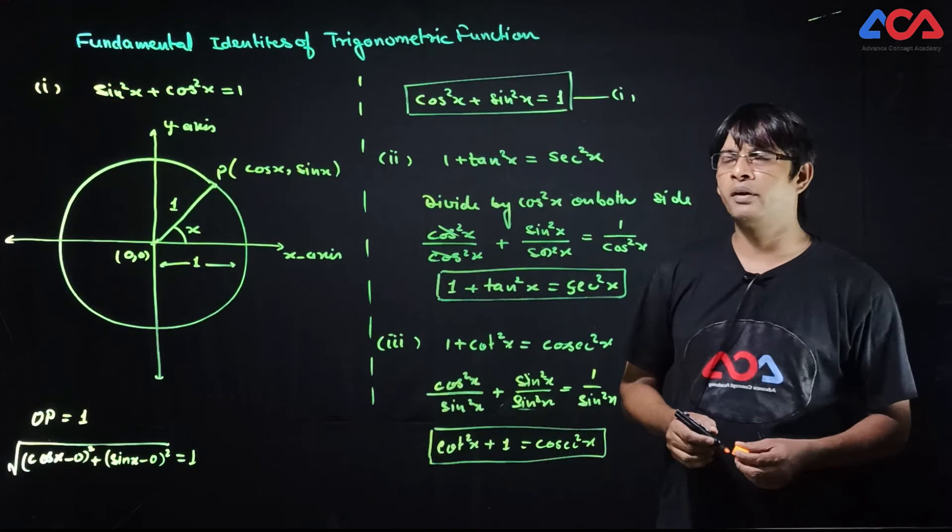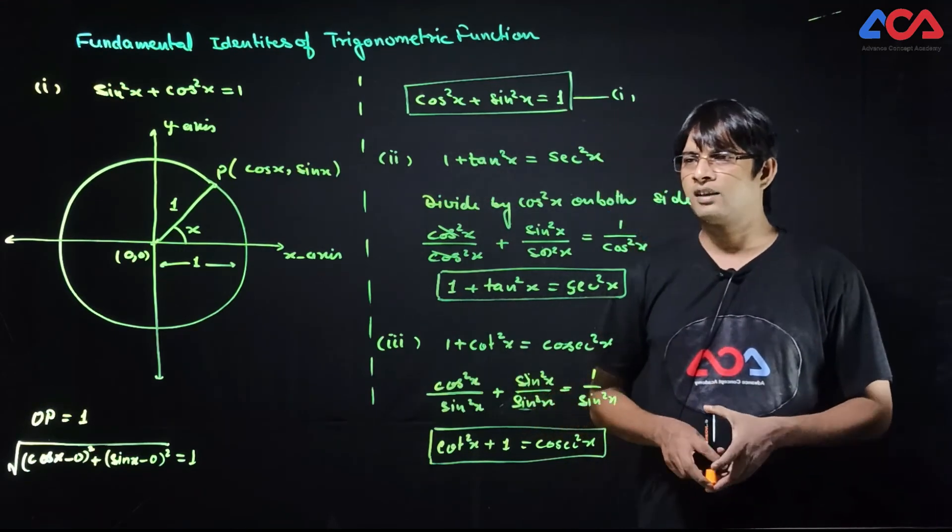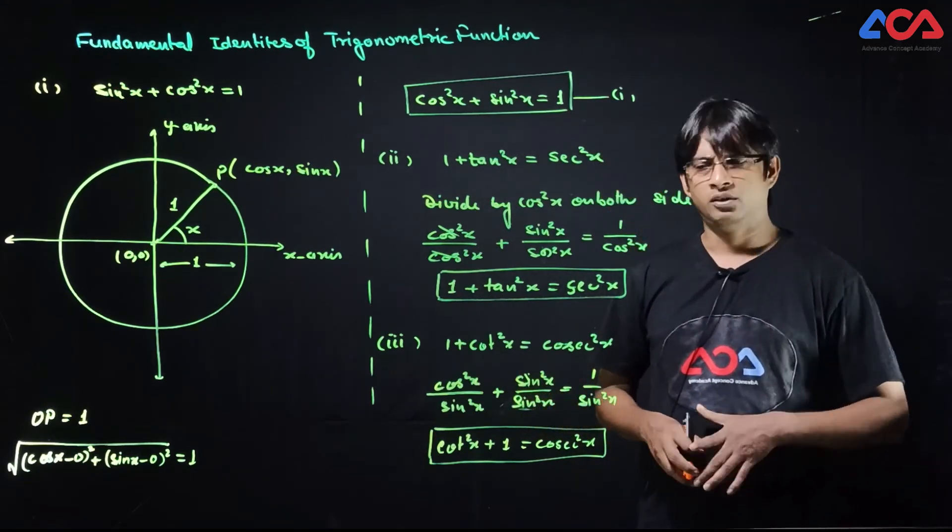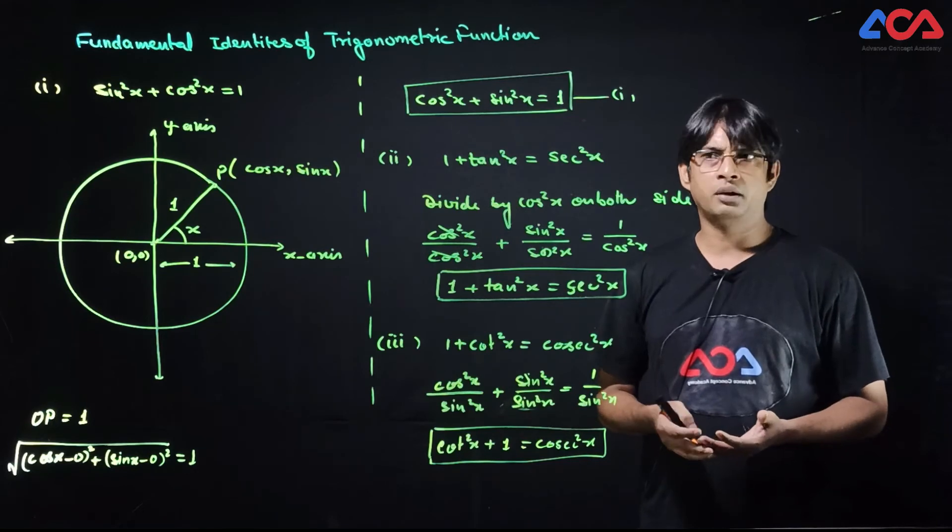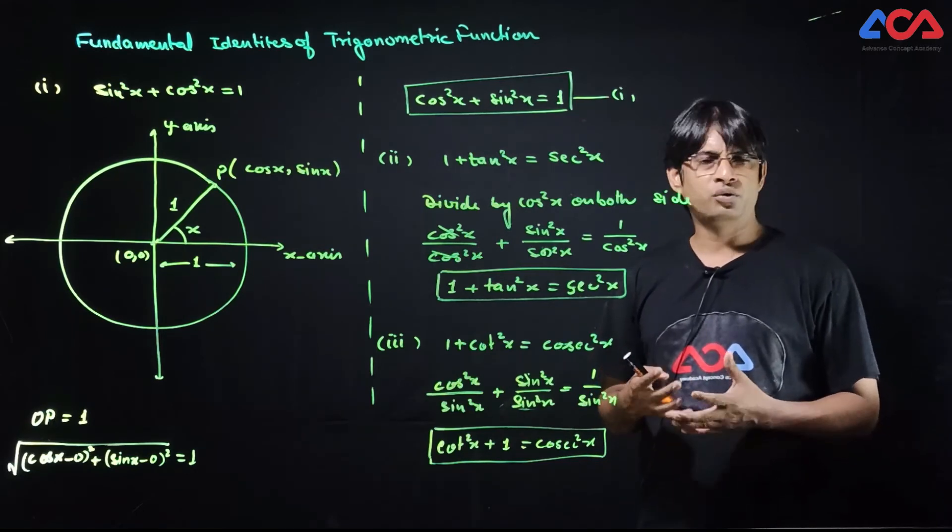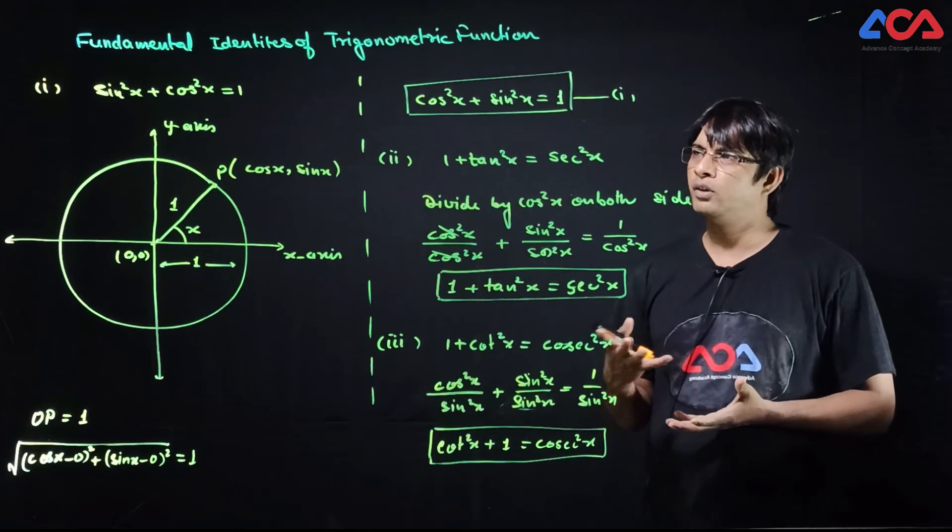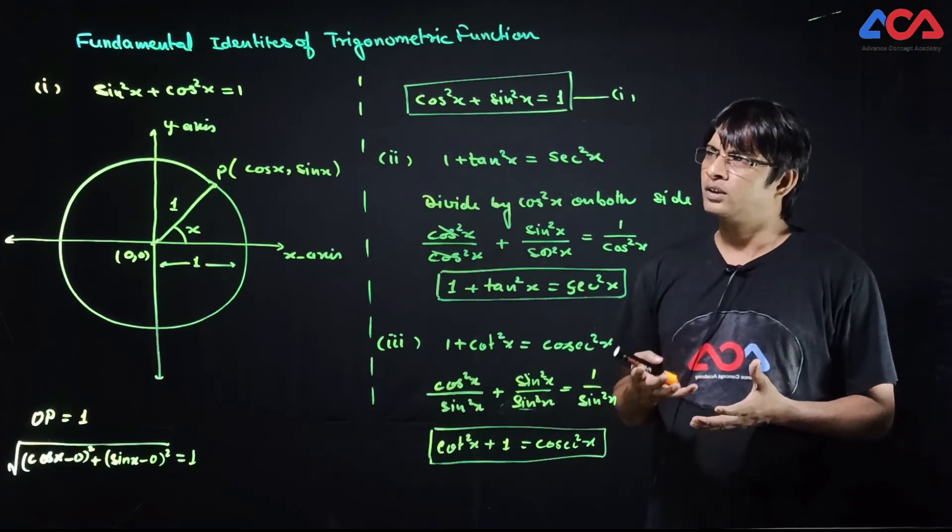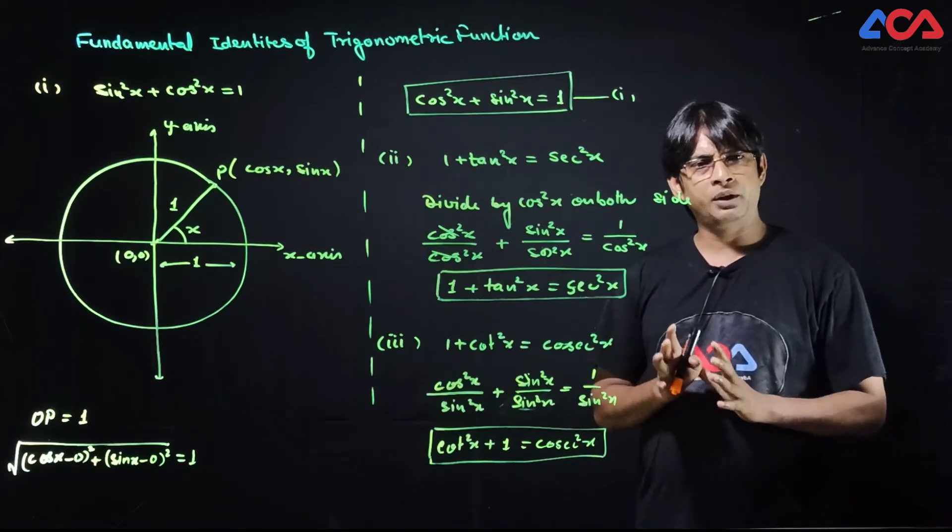These three basic identities we studied in class 10 and will use in class 11. We have proved them using the unit circle, and we will continue to use the unit circle to prove other properties.